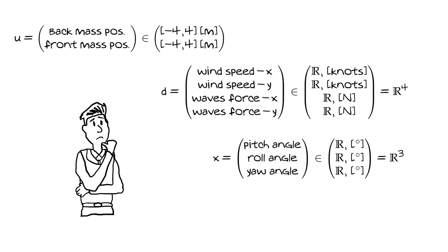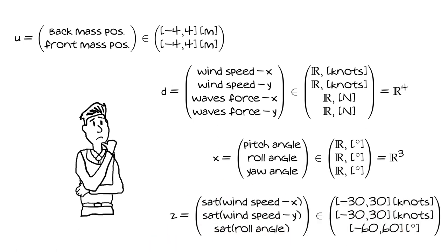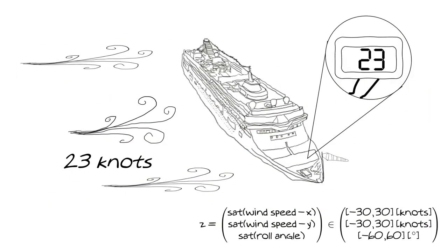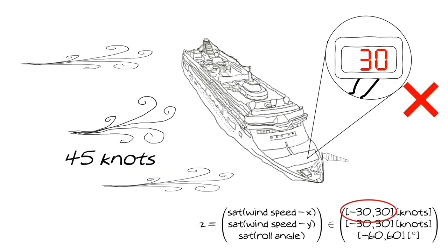The mathematical compact form for writing a vector of 4 elements where each element is a real number is denoted accordingly. For the state, each element can be positive or negative and they are real numbers. For the measured output, we use a saturation function to indicate that we can measure only a subset of all possible states. The saturation function gives us the correct measure as long as the measured value is within bounds; otherwise it saturates to the upper or lower limit.